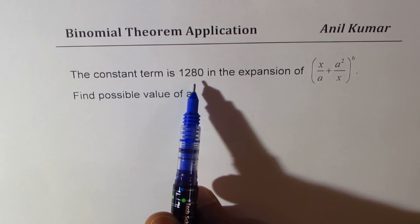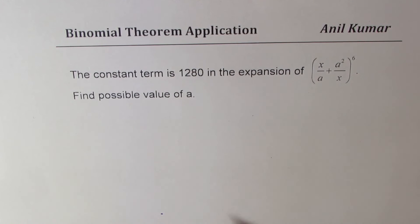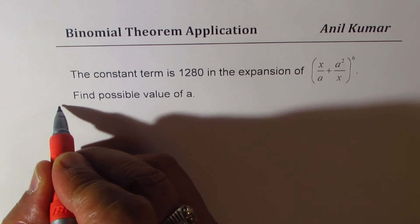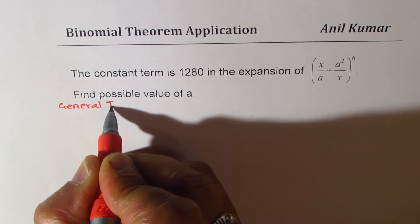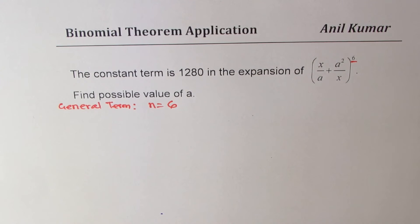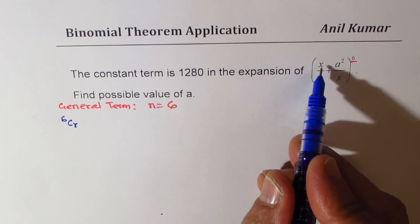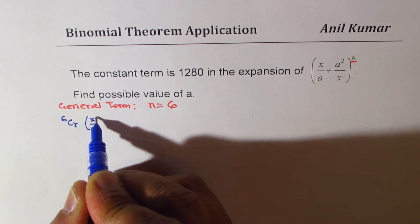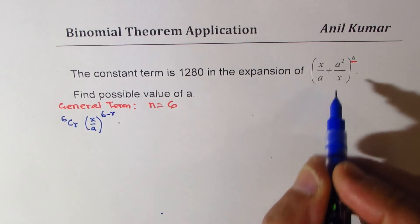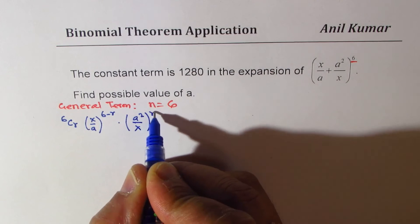Question 3: The constant term is 1280 in the expansion of (x/a + a²/x) to the power of 6. Find the possible value of a. For such questions, we need to find the general term first. Since the exponent is 6, n = 6. The general term is 6Cr × (x/a) to the power of 6−r × (a²/x) to the power of r.